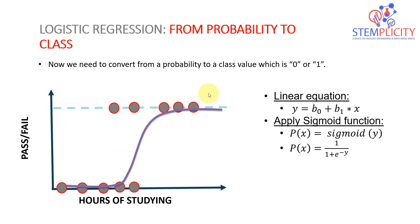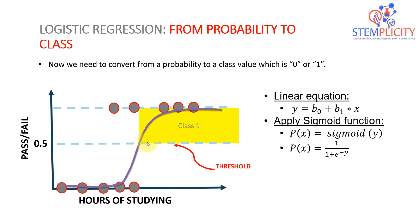We convert our probability to a class value — either zero or one — by applying a threshold. We set the probability threshold at 0.5. If the probability is higher than 0.5, you are class one, which means success. If the probability is below 0.5, you are going to fail — that means class zero. So we calculate a probability using the sigmoid function, then apply a threshold to classify as class one or class zero.